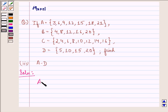We see that A minus D is the set {3, 6, 9, 12, 18, 21}.